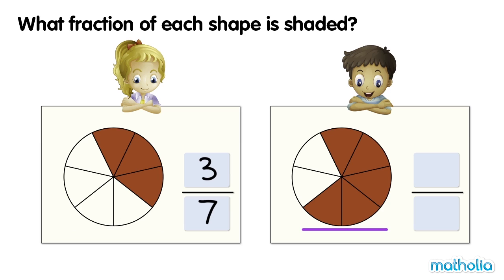This circle is also divided into seven equal parts. Five of the parts are shaded. Five sevenths of the circle are shaded.